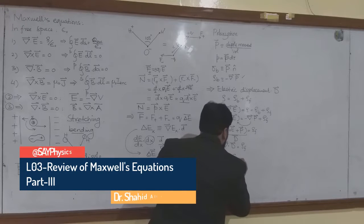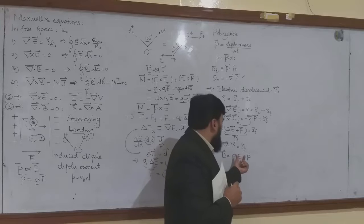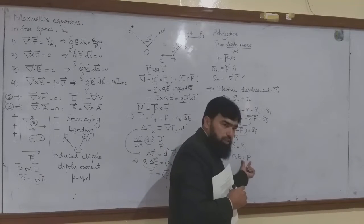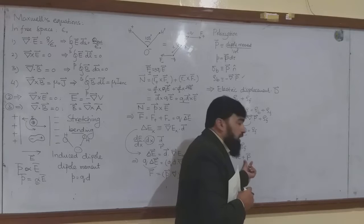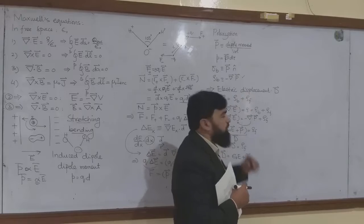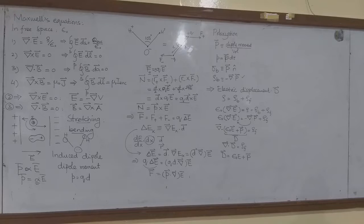D is equal to epsilon naught E plus P. The dimensions of D are actually the same as P — it is polarization. D is polarization dimension-wise. So if it is polarization, then why are we calling it electric displacement? That's the question. What is meant by electric displacement? When displacement has occurred due to the electric field, the charges are displaced, and we call that polarization.